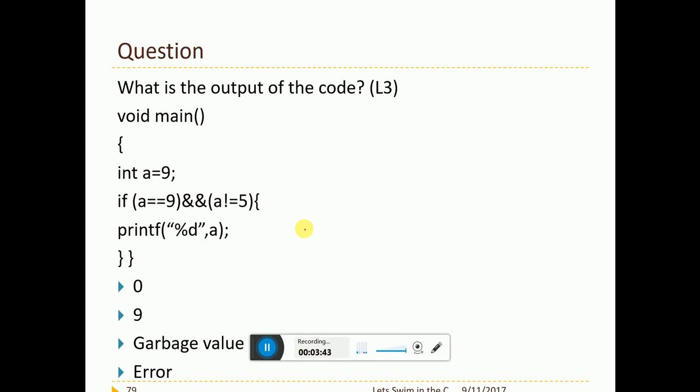Now see this. This is a very important question. If a equal to equal to 9 and and which is logical and and a not equal to 5 printf a. Is this right? No, this should be in one bracket which is missed out here. The conditions must be specified in a single parenthesis which is missing here.